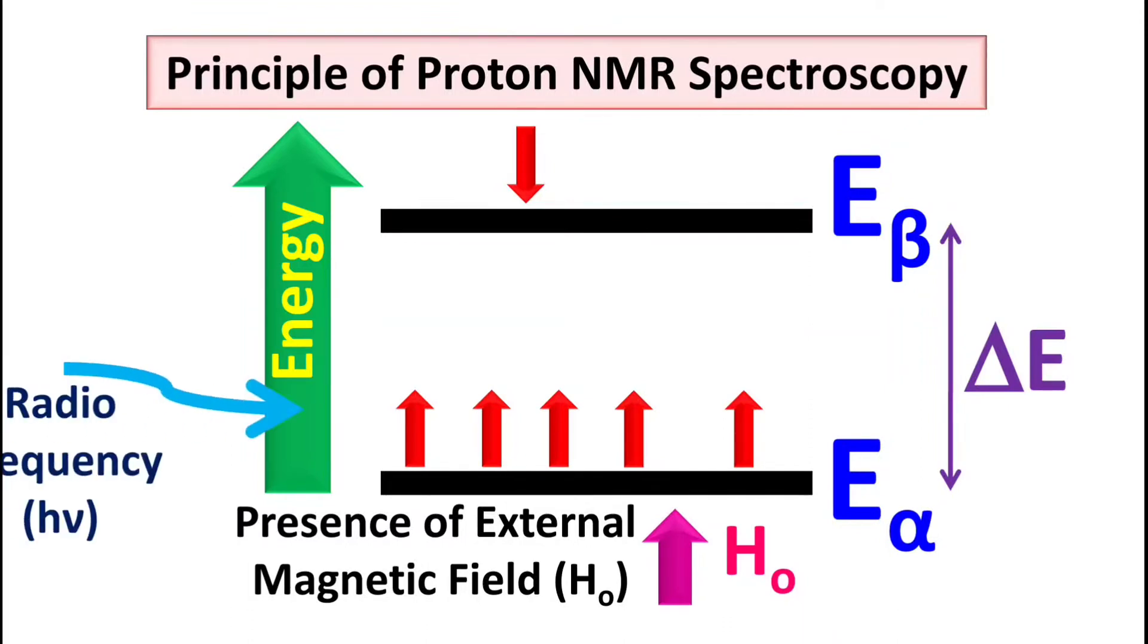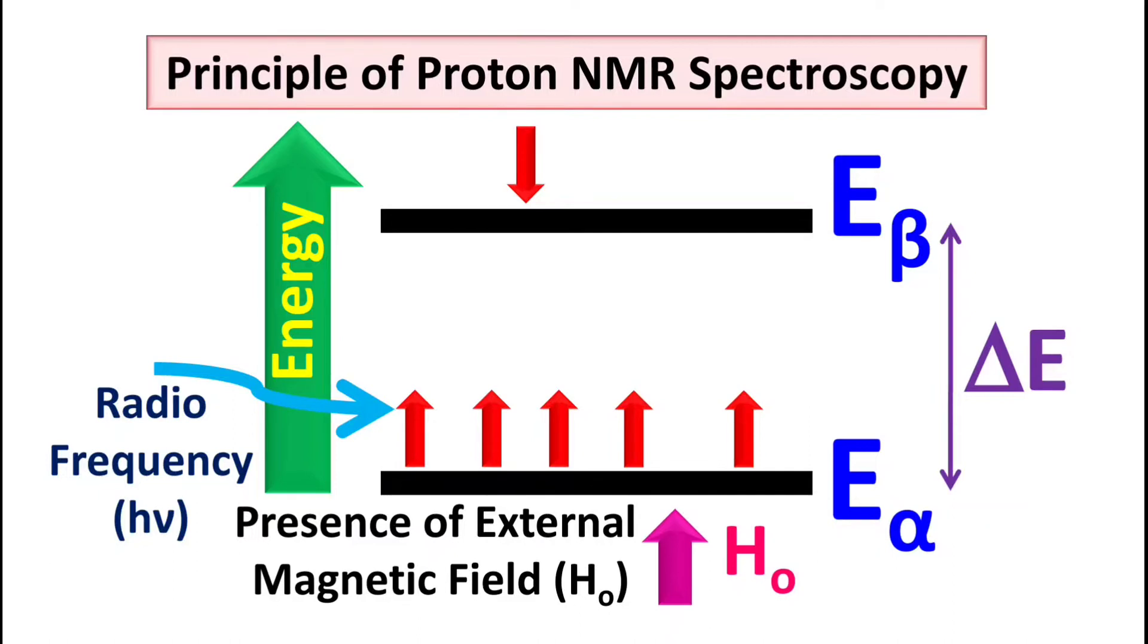Afterwards, when radio frequency falls on this active nuclei under the condition of resonance—basically resonance is the condition in which we exactly match the energy of the two systems. Here in this case, one system is radio frequency energy, and second is the difference between the E-alpha and E-beta energy level. So if you want to have the NMR spectroscopic signal, you need to apply radio frequency which exactly matches the energy of E-alpha and E-beta energy level.